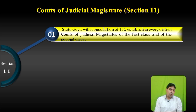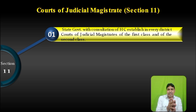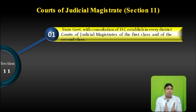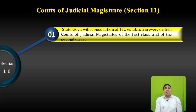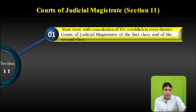Section 11 of the Criminal Procedure Code deals with the courts of Judicial Magistrate. As per the provision of section 11 sub-clause 1, the state government, with consultation of the High Court, shall establish in every district courts of Judicial Magistrate of 1st class and 2nd class. So in every district, JMFC को appoint करेगी।